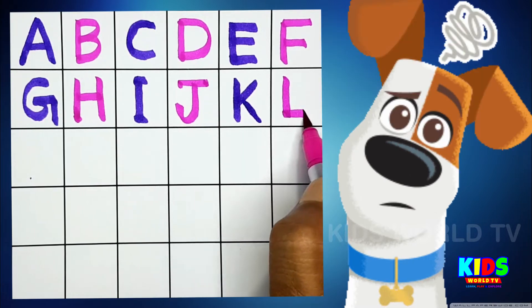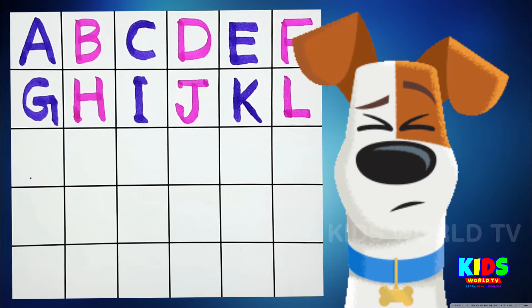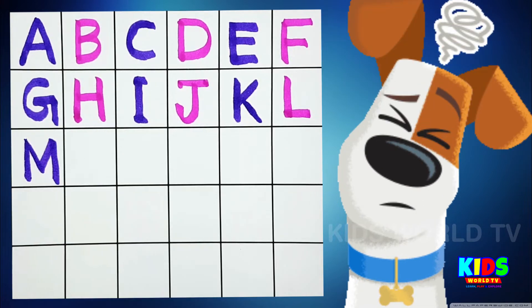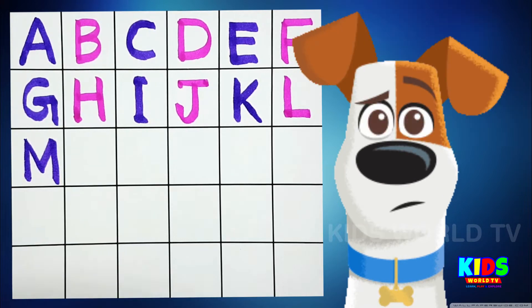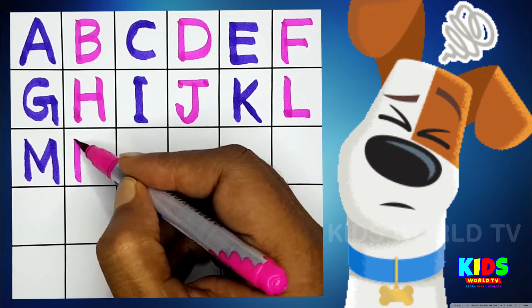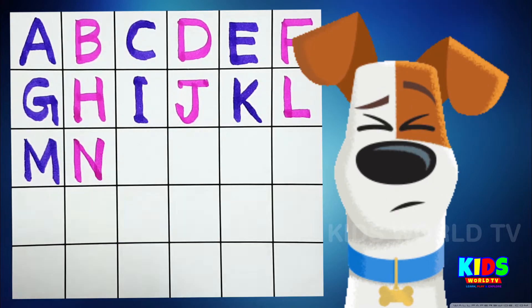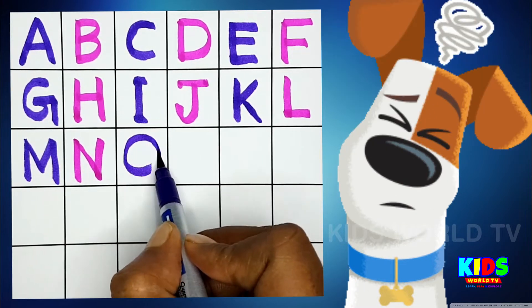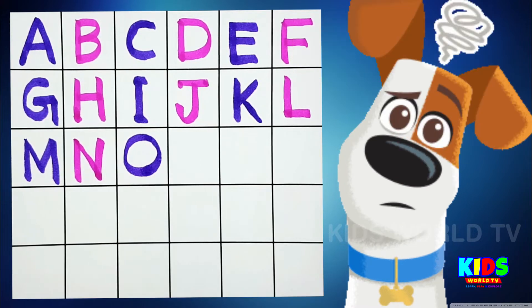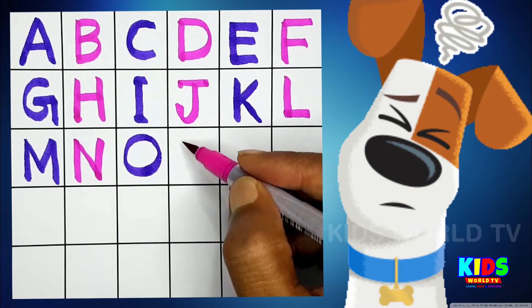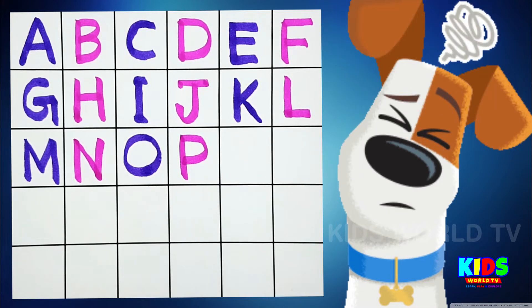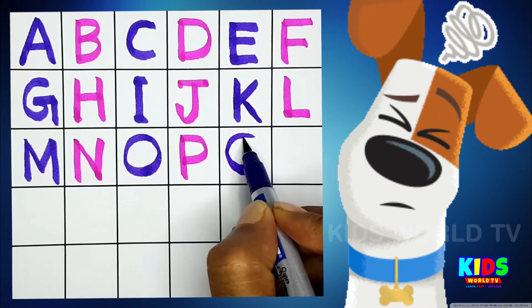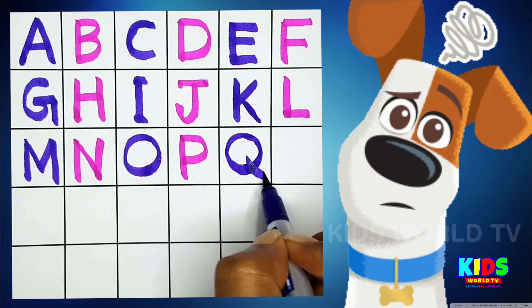L for Lion, M for Monkey, N for Nest, O for Octopus, P for Parrot, Q for Queen.